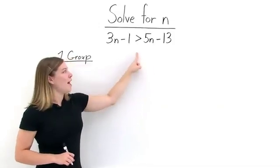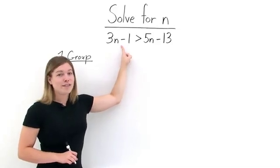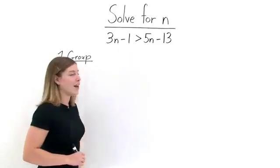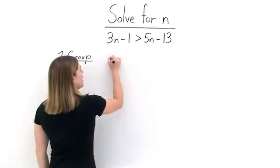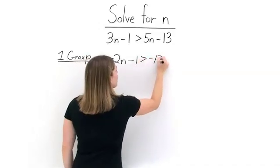First, let's move 5N to the left-hand side of our inequality. So, we want to subtract 5N from both sides. When we take 3N minus 5N, we get a negative 2N. Then we just rewrite everything else.